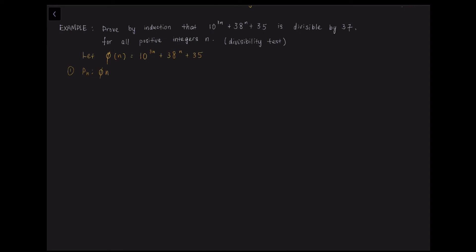So let us first let φ(N) equals to 10 to the power of 3N plus 38 to the power of N plus 35. And then we start with the first step, which is the proposition P(N). So this equation φ(N) is divisible by 37 for some positive integer N.